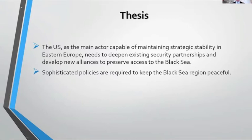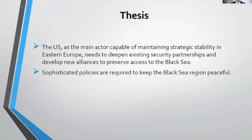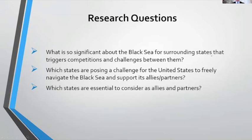My paper makes the case that the U.S., as the main actor capable of maintaining strategic stability in Eastern Europe, needs to deepen existing security partnerships and develop new alliances to preserve access to the Black Sea. Sophisticated policies are required to keep the Black Sea region peaceful, because any action by the United States — even simply sending one ship into the region — is aggressively reacted to by Russia, with fighter jets and propaganda about how bad it is for the U.S. to be in the region.